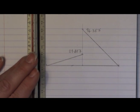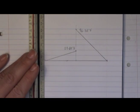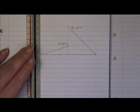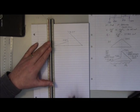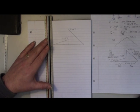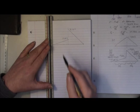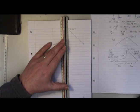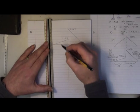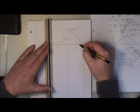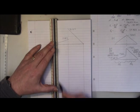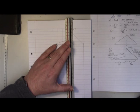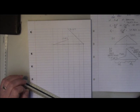Next, I need to rule some construction lines down the page. I'll put one at the step change, one at the far end, and a couple randomly spaced in between. These do not need to be uniformly spaced. The more lines you put in, the more accurate the result; fewer lines means less accuracy but a faster process.